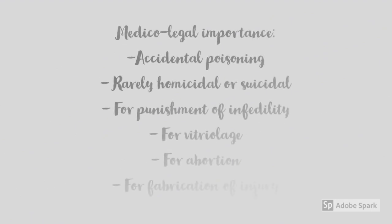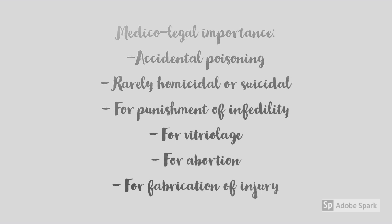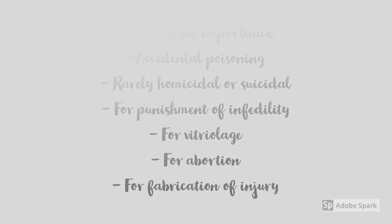What is the medico-legal importance of Semicarpus poisoning? The poisoning could be accidental due to ingestion of juice under the advice of quacks. However, it is rarely homicidal or suicidal. As the juice has irritant properties, it can be used for punishment of infidelity by inserting the juice into a female's vagina. It has also been used for vitriolage, for abortion, and for fabrication of injury for false charges of assault.